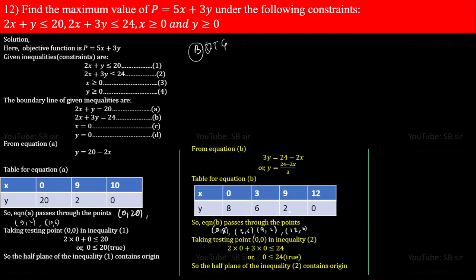If you're confused about the less-than or greater-than sign direction: the mouth of the symbol opens toward the bigger number. So 0 ≤ 24 is true — 24 is greater, the mouth opens toward it. Since the testing point gives true, the half plane of inequality 2 also contains the origin. If it were false, it would not contain the origin.